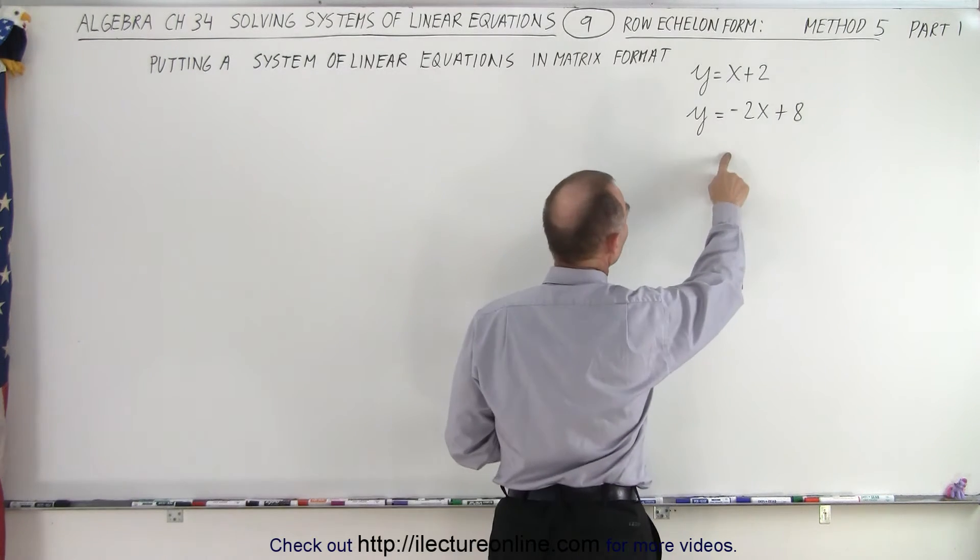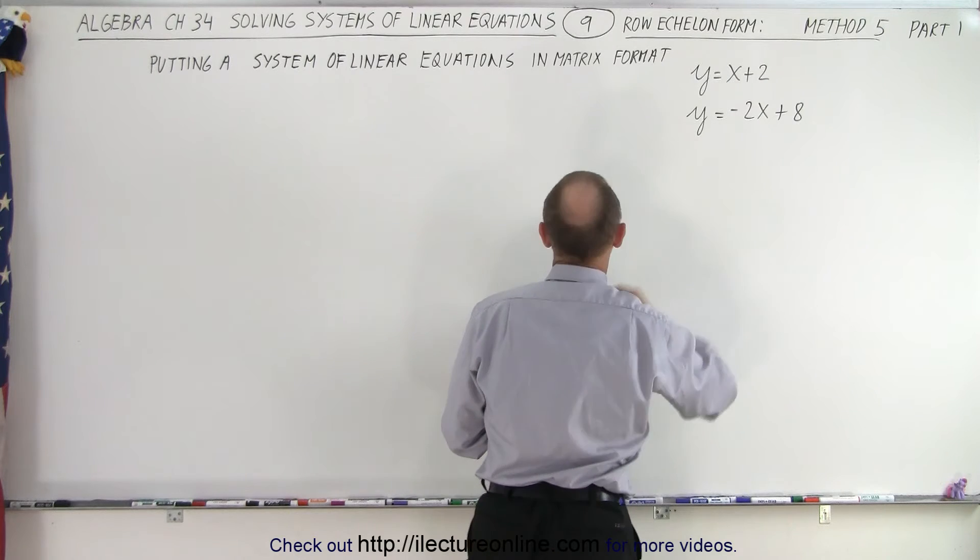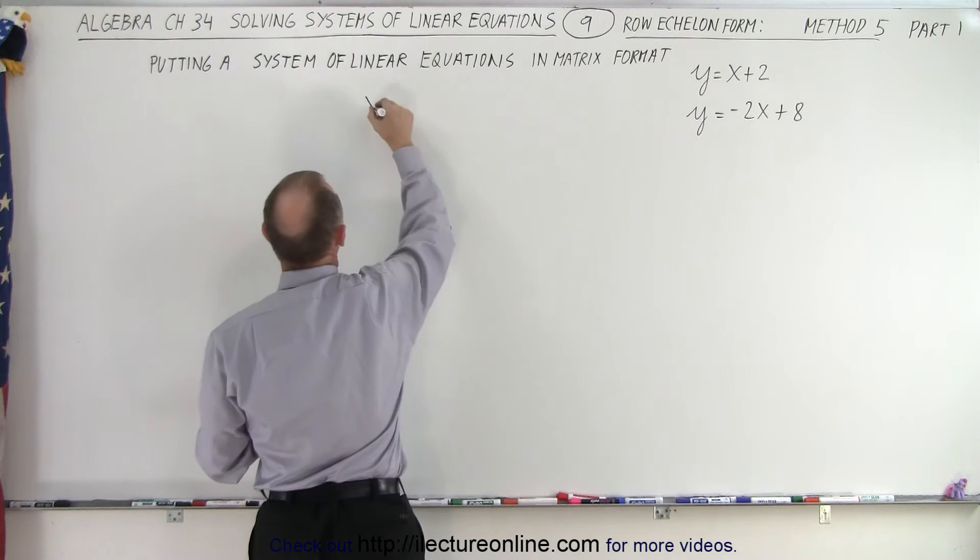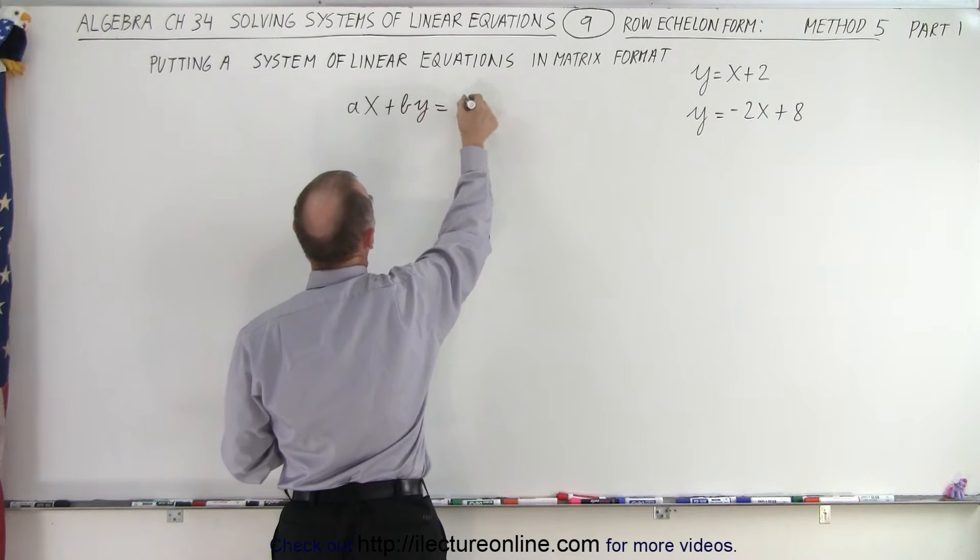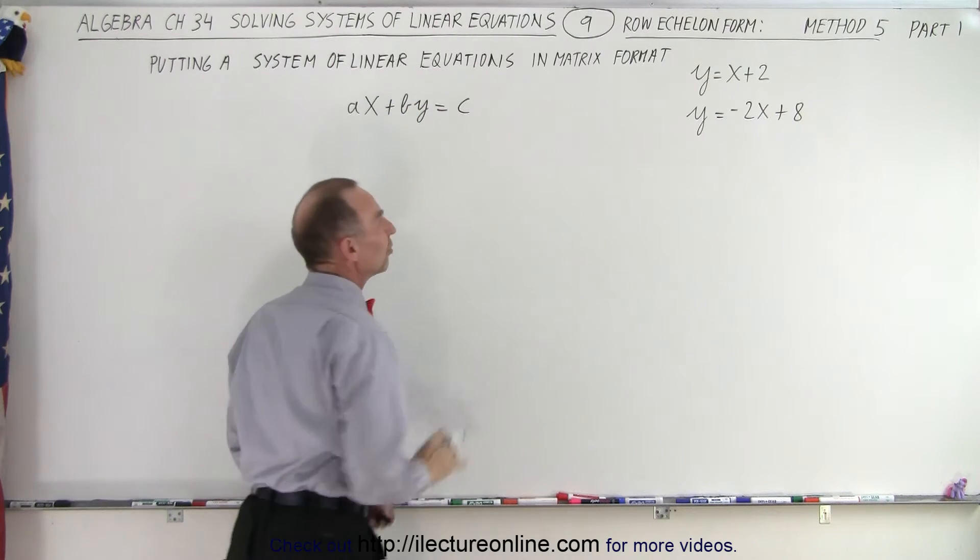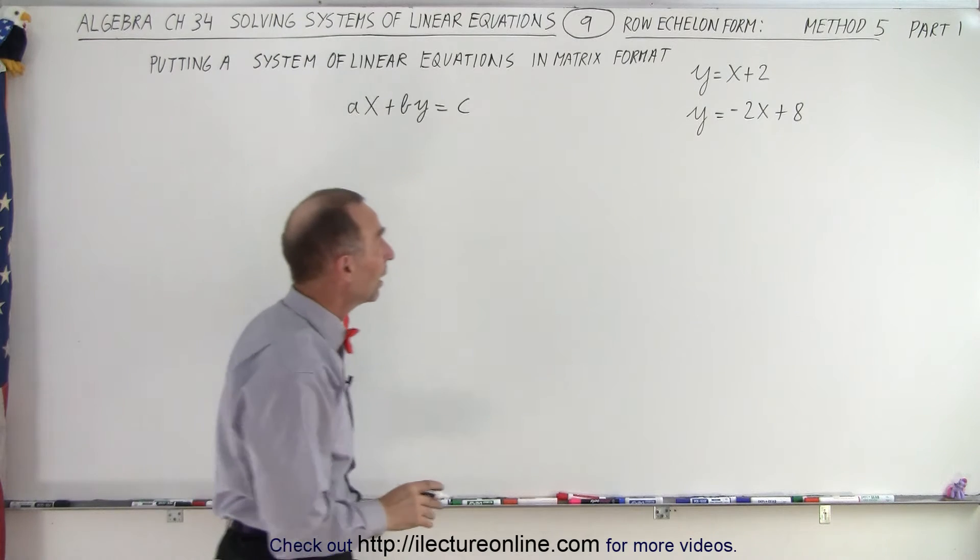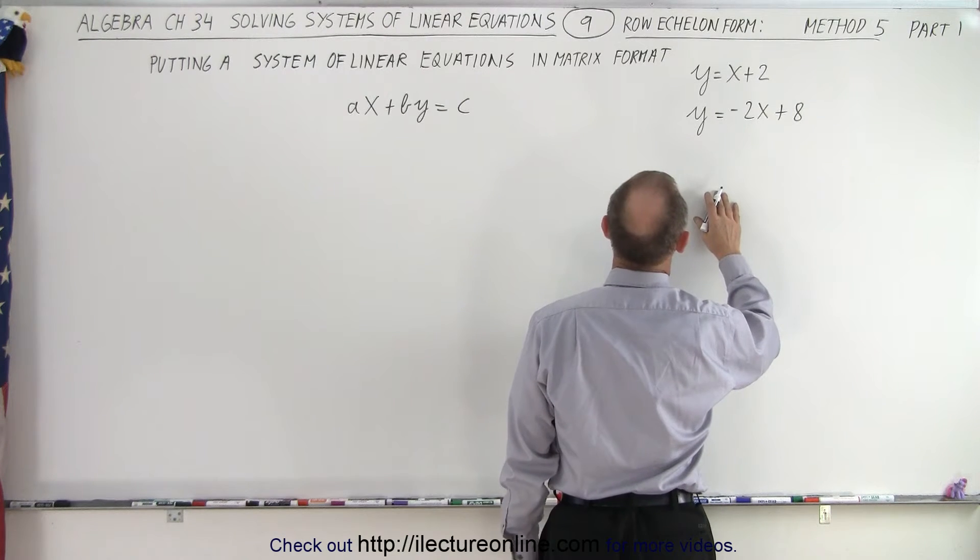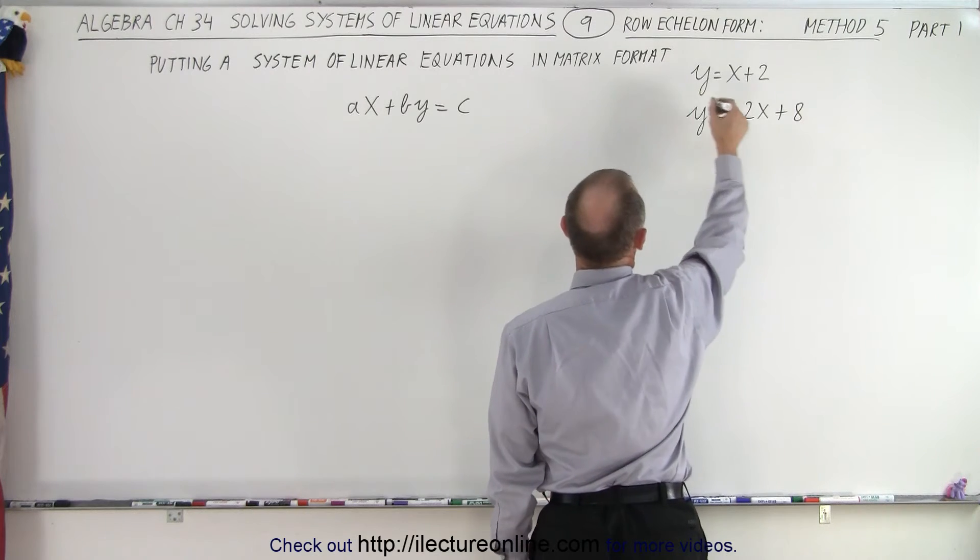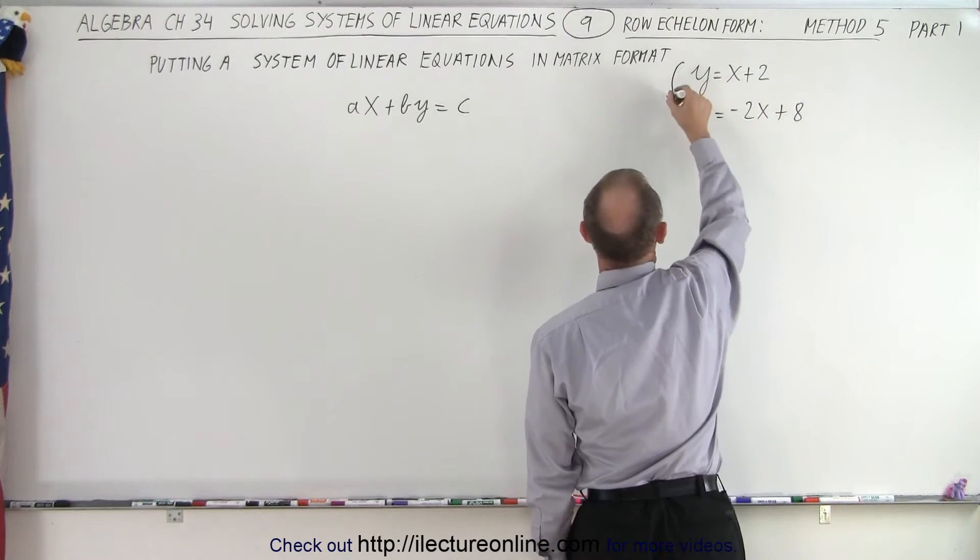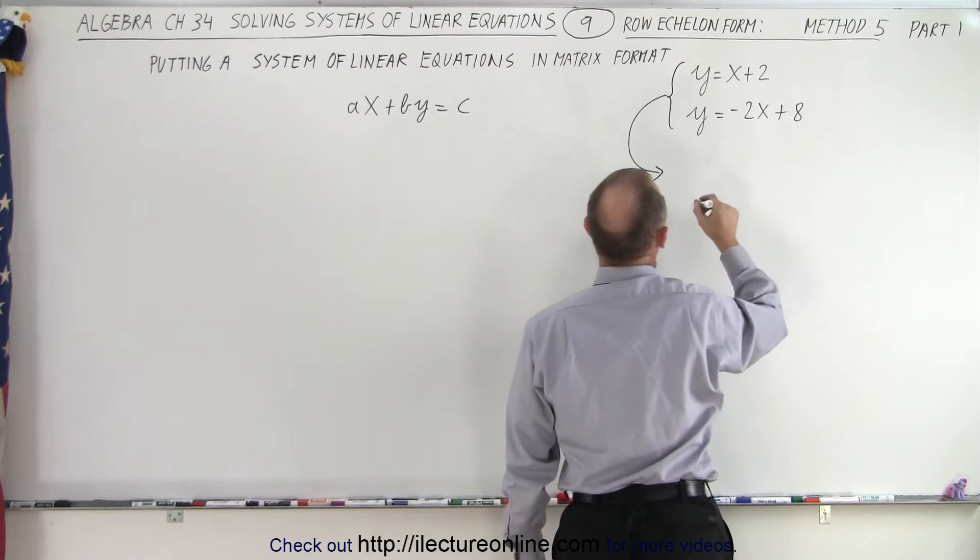First, we're going to rewrite this in the format ax + by = c. We're going to put both equations into this format. Notice we want to put y on the other side and two over here. The first equation, we're going to write as -x + y = 2.